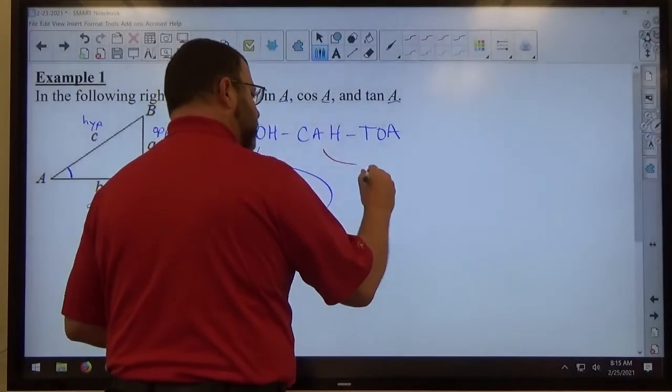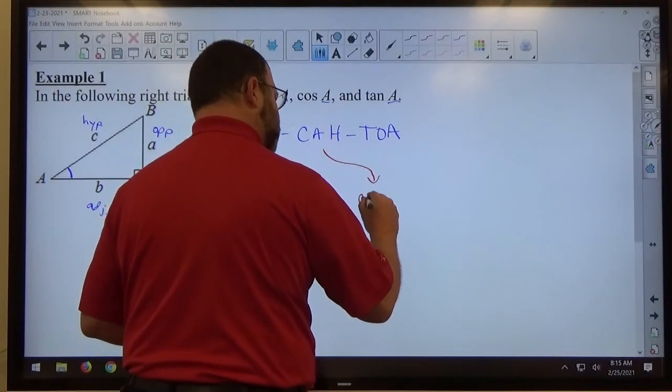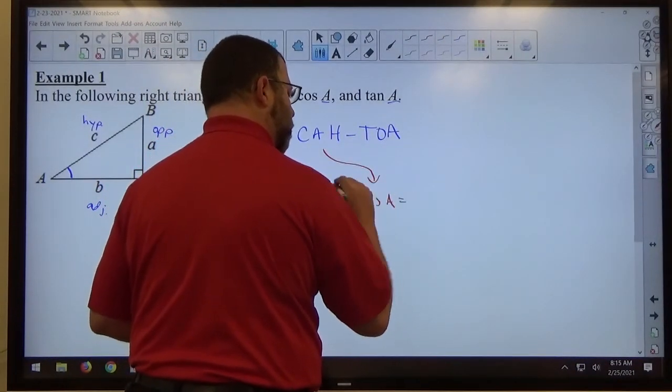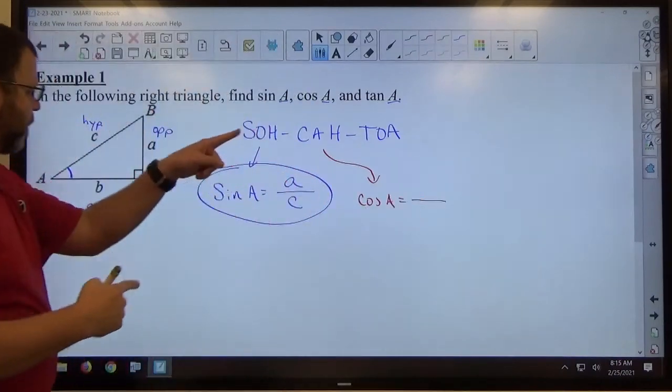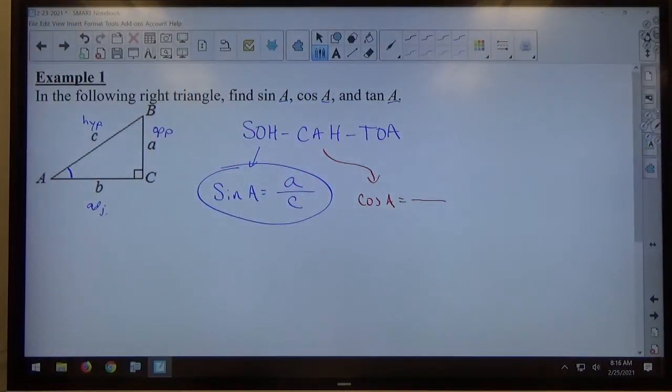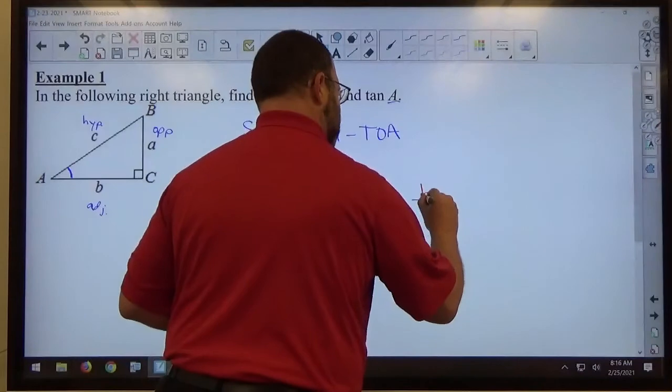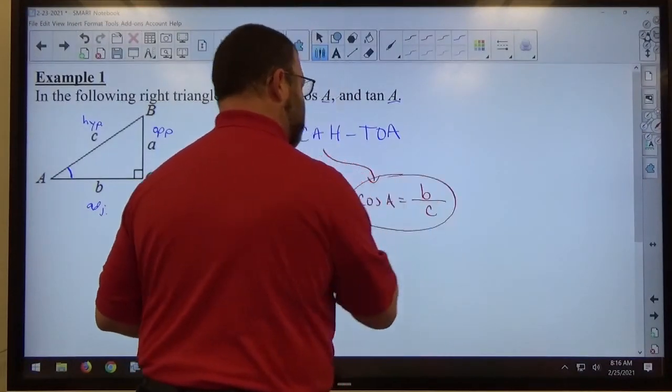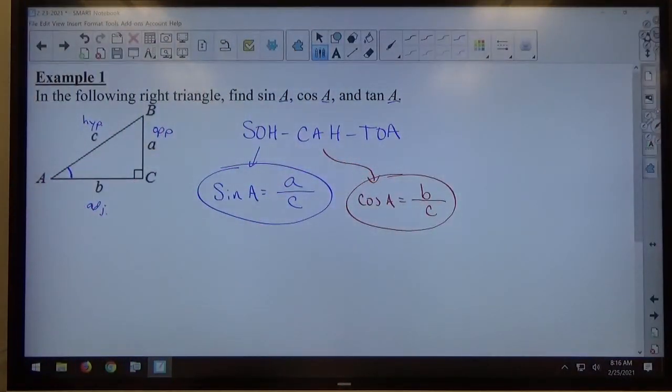So the CAH part tells me cosine of the acute angle A that we're working with equals the adjacent b over the hypotenuse c. Again, I can't make b over c any prettier than that. That's the best I can do with the information they've given me.